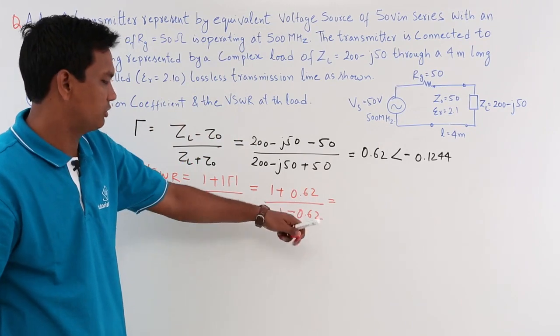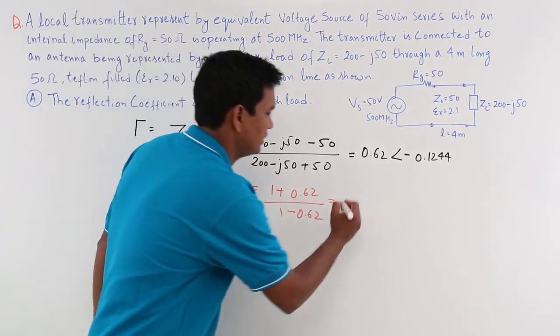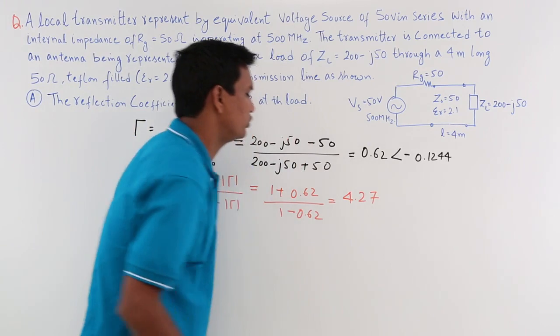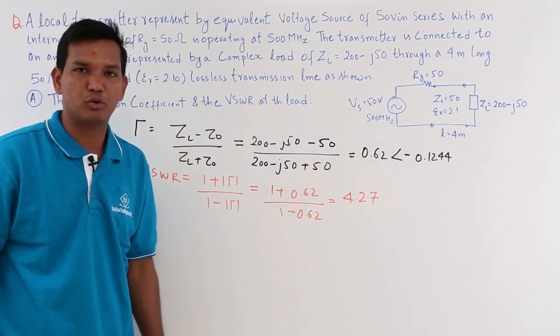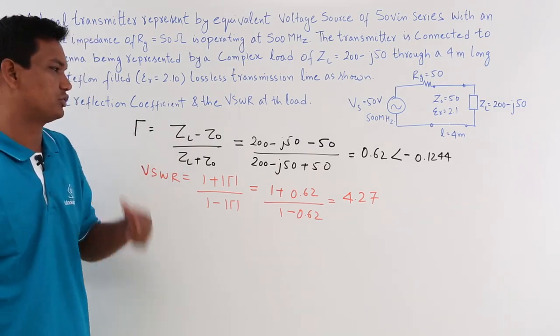Now, you just put the values and you can get 4.27. So you got VSWR and the reflection coefficient. We have solved the first part of this question.